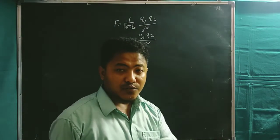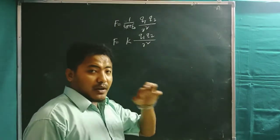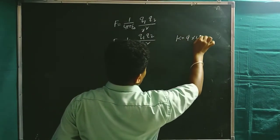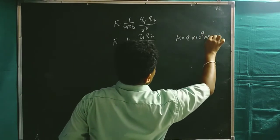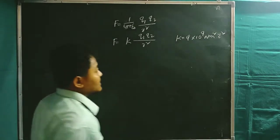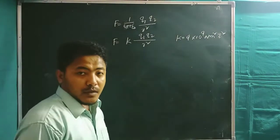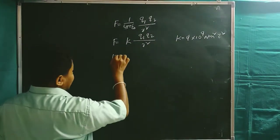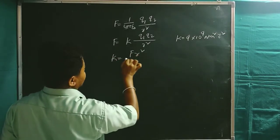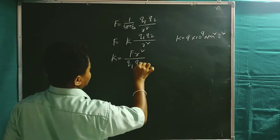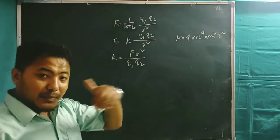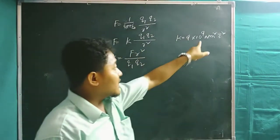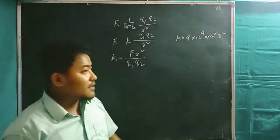The electrostatic constant k has a numerical value of 9 × 10⁹ N·m²/C². This is the SI unit of electrostatic constant k. Now if you want to find out k separately, we can write k = F·r² / (q1·q2), from which it is very easy to find the SI unit of k.